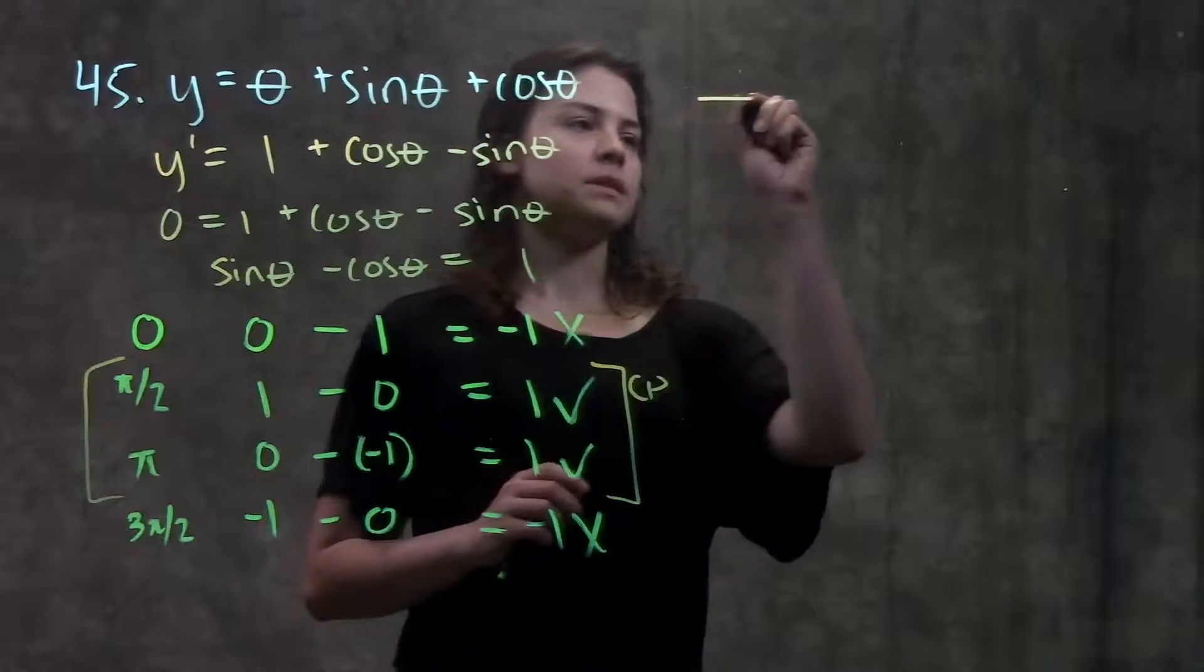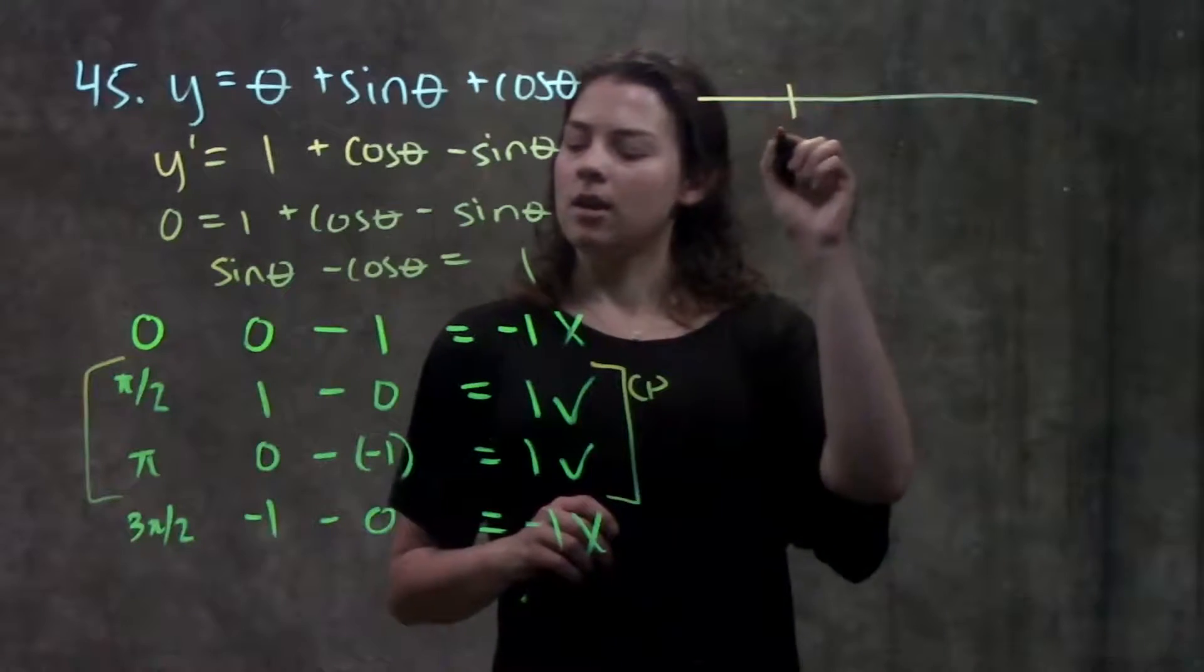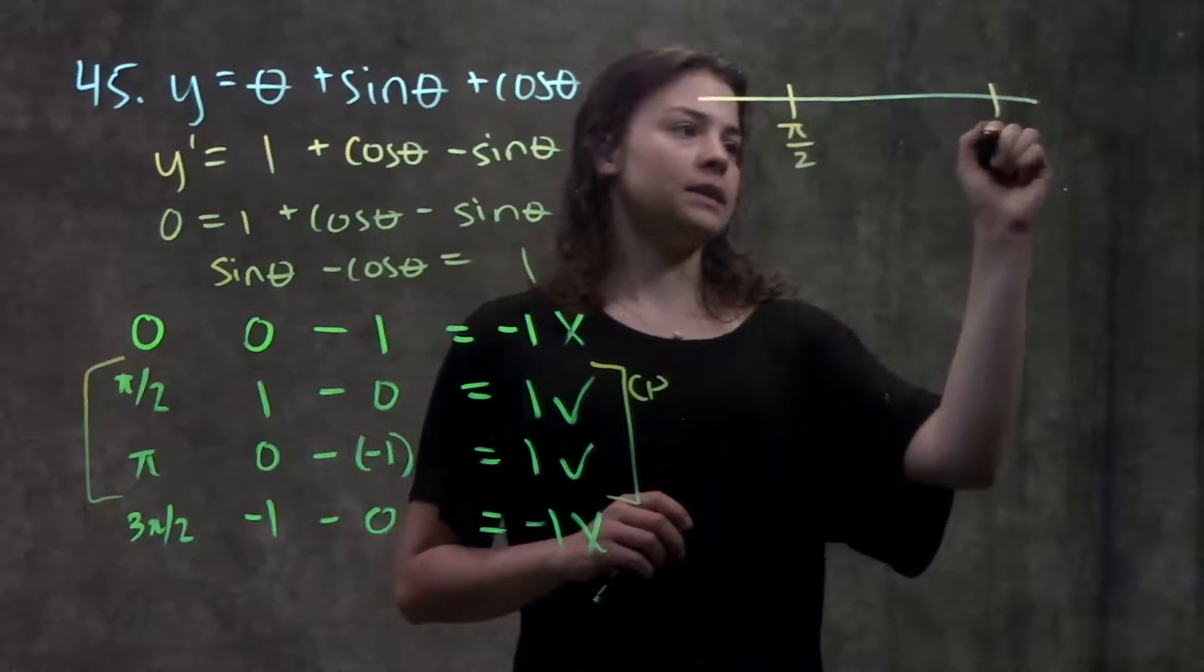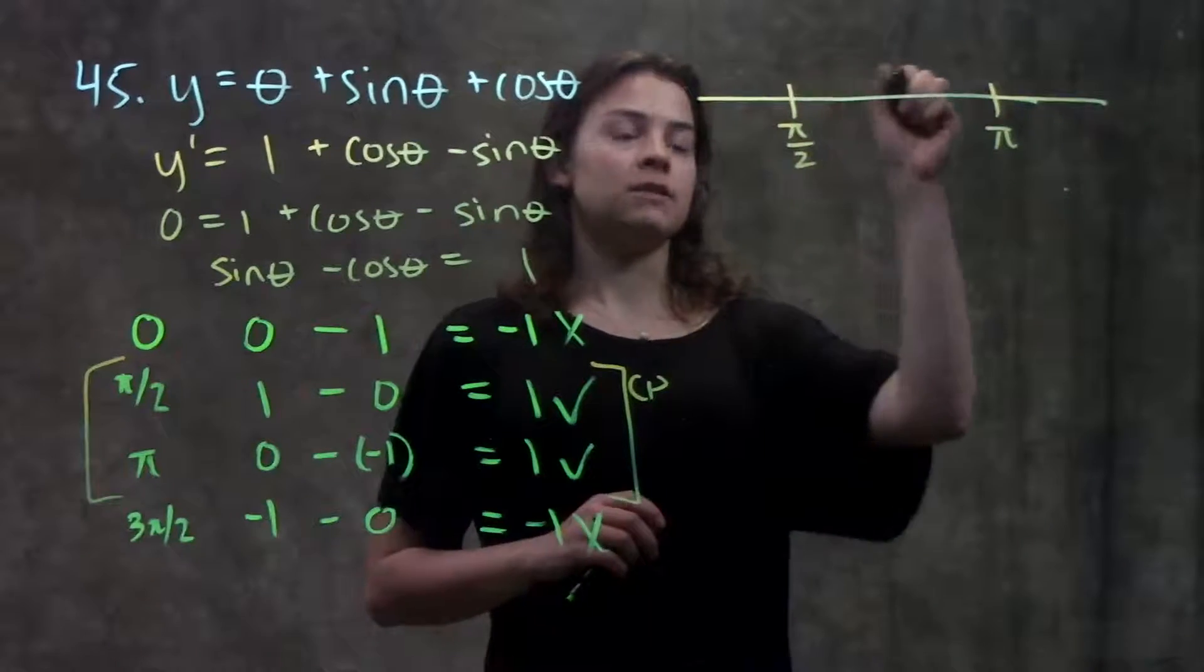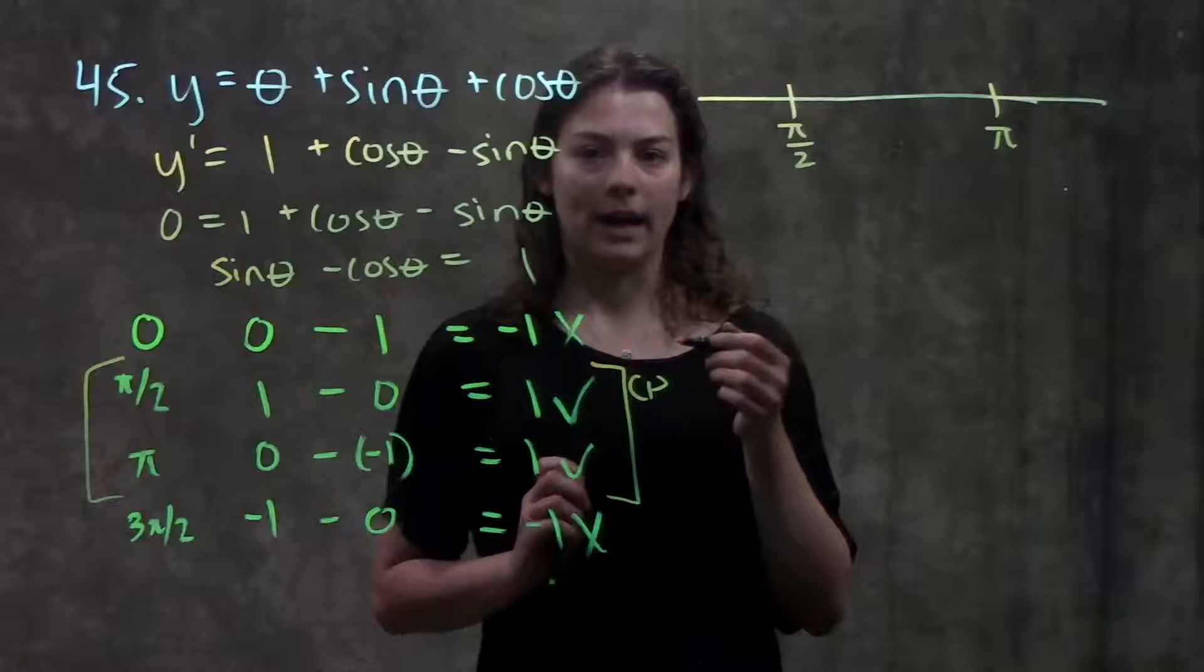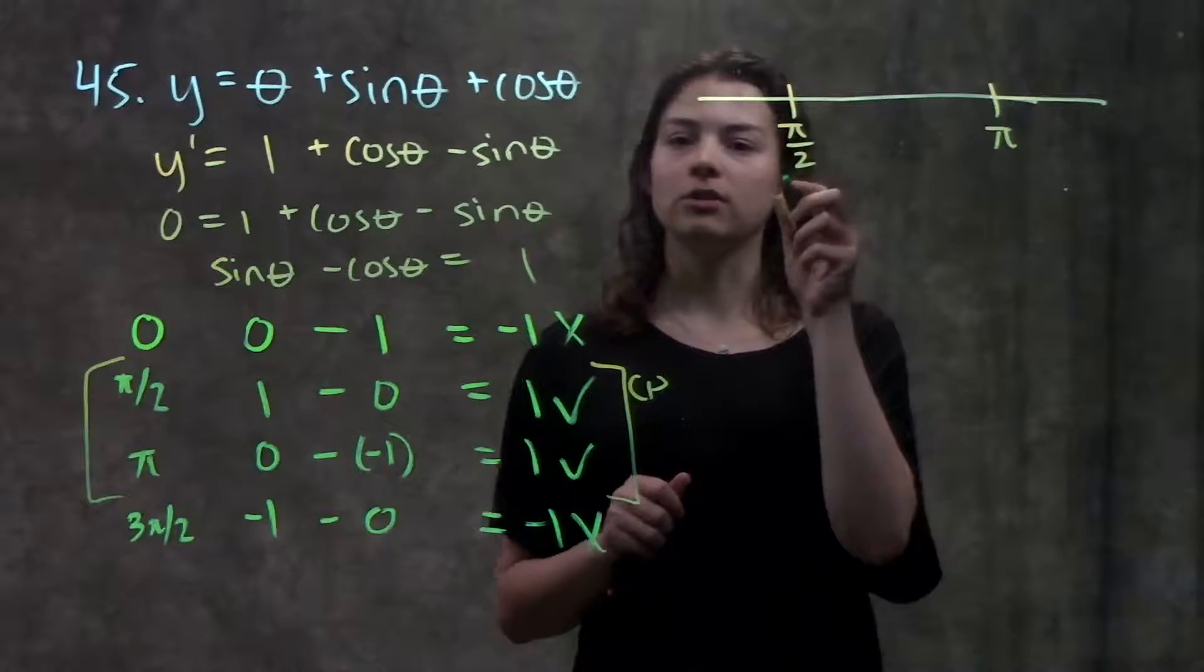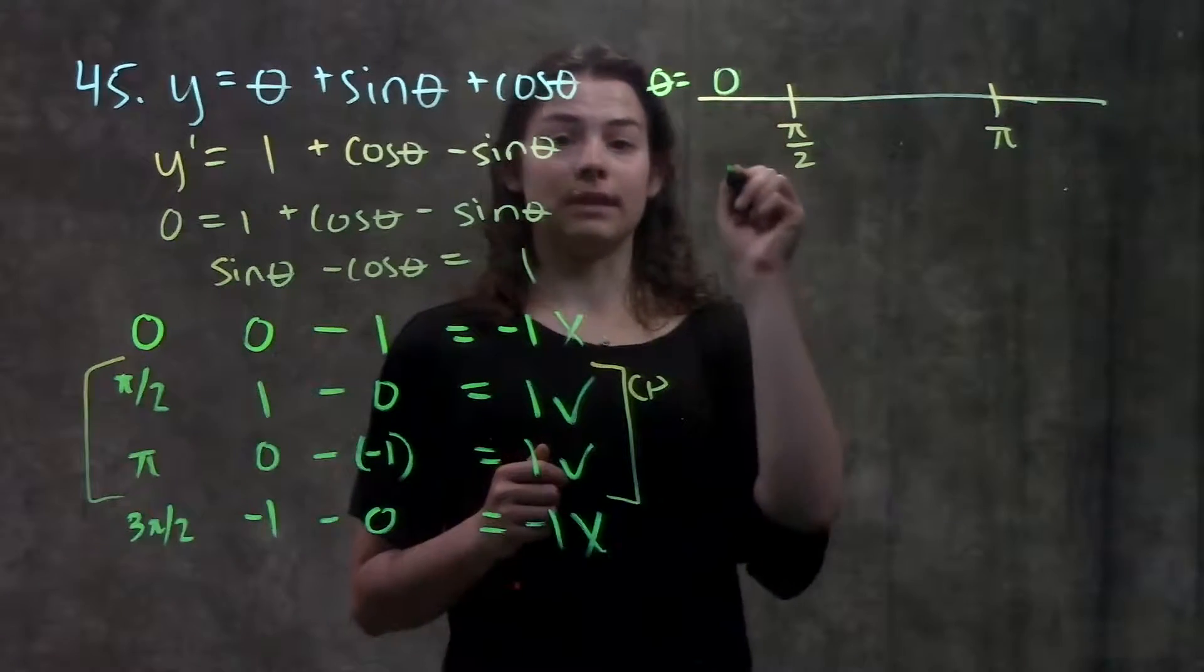Okay so next step to see where this function is increasing and decreasing, I'm going to make my number line, put in my critical points, and test values in each of these intervals, and see what my derivative is doing, whether it's positive or negative. Okay so in this first interval here, from zero to pi over two, let's try an easy number, let's try theta equals zero.